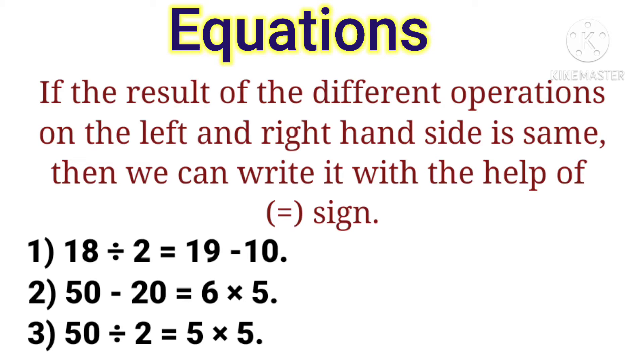So left hand side and right hand side are equal. Next one is 50 minus 20 and 6 multiplied by 5, and third one is 50 divided by 2 equals 5 multiplied by 5.